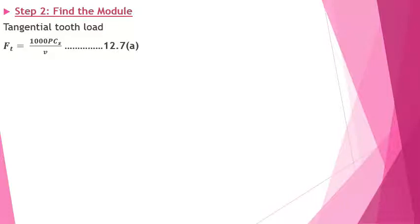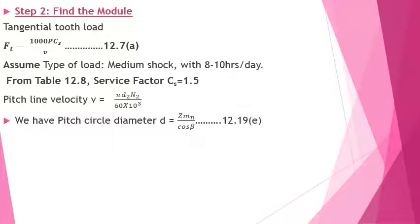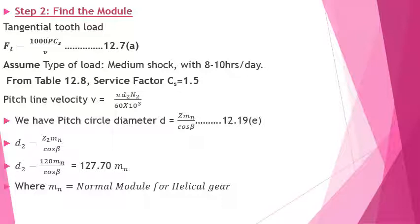Next step is to find the module. Using equation 12.7a for tangential tooth load FT, since service conditions are not given, we assume medium shock with 8 to 10 hours service per day. From table 12.8, the service factor CS = 1.5. For helical gears, pitch circle diameter D = Z·mn / cos(beta), so D2 = 127.7·mn. Pitch line velocity V = 5.349·mn.